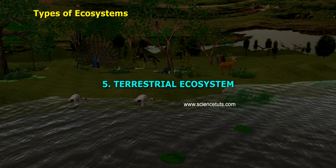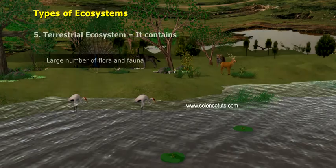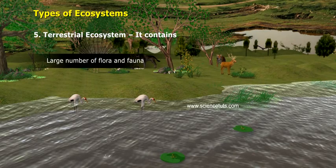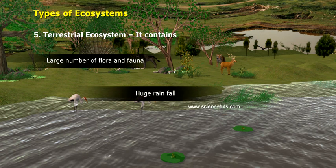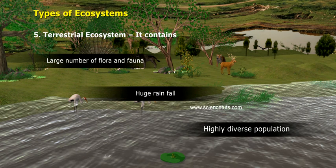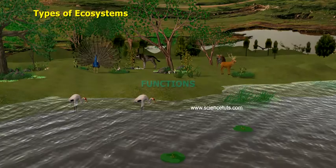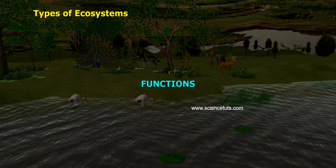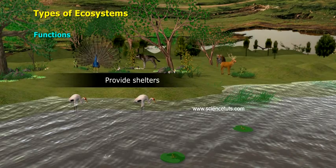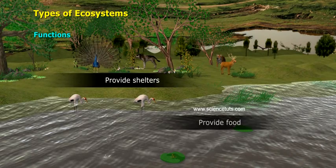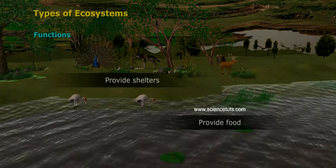Terrestrial Ecosystem. It contains a large number of flora and fauna, huge rainfall, and a highly diverse population. Functions include providing shelters and providing food.